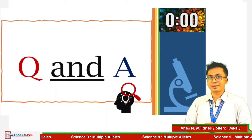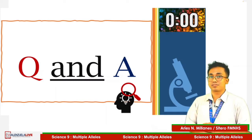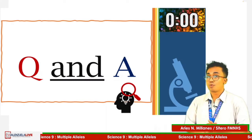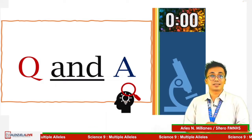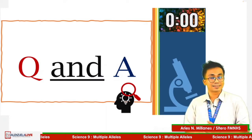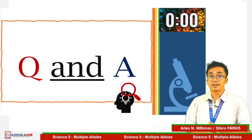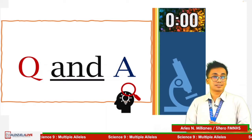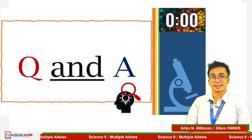Does codominance only apply to animals, and is incomplete dominance only for plants? The answer is no. There are some animals that undergo incomplete dominance, like birds and some mammals like rabbits. Also, there are some flowers that produce two colors at the same time, like camellia flowers.